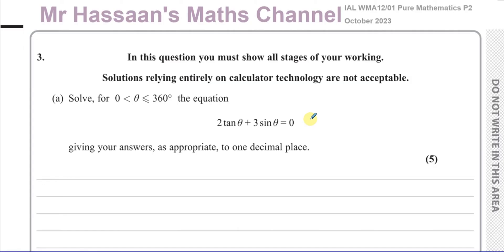In this question you must show all stages of your working — solutions relying entirely on calculator technology are not acceptable. Solve for theta between zero up to and including 360 degrees the equation 2 tan theta plus 3 sin theta equals zero, giving your answers as appropriate to one decimal place, for five marks.